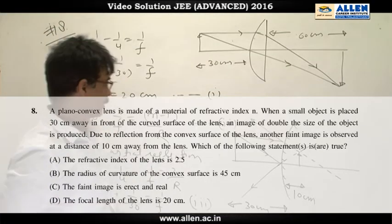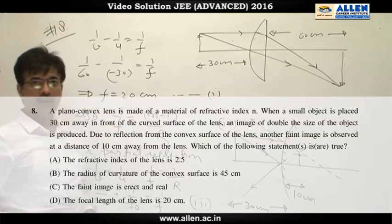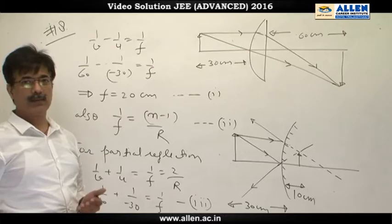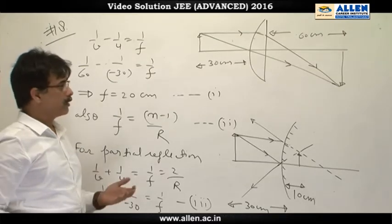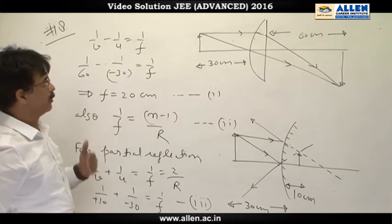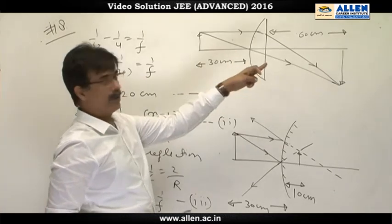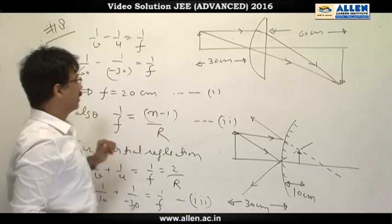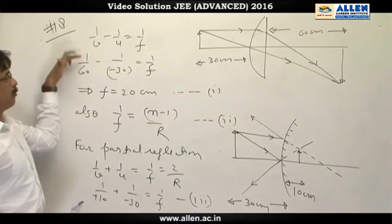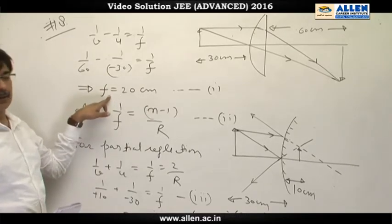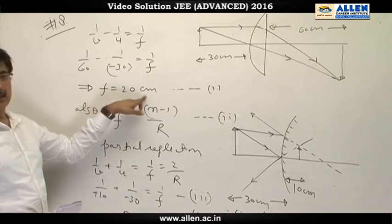Question number 8. This question is based on refraction and partial reflection from a lens. First, we consider refraction. We have been given the object distance and the image distance. By using lens formula and proper sign convention, we will get value of focal length that comes out to be 20 centimeter.